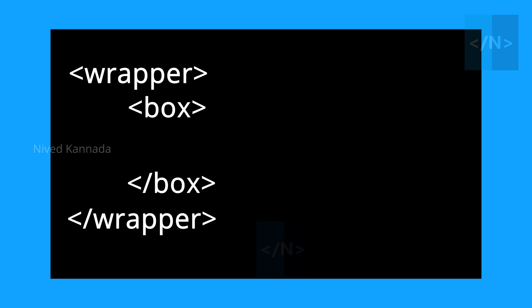This box is a gift. We can define the box tag and close the tag. This is the same tag. We have a wrapper tag, a box tag, and a gift tag — here you also have a child element. The gift is a child element, the box is a parent, and the wrapper is the grandparent.